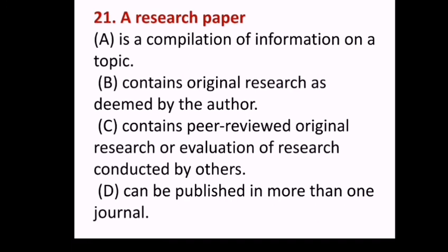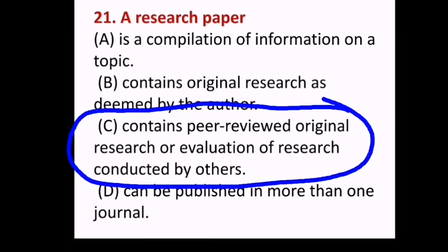Question 21: A research paper — (A) is a compilation of information on a topic, (B) contains original research as deemed by the author, (C) contains peer-reviewed original research or evaluation of research conducted by others, (D) can be published in more than one journal. Answer C, contains peer-reviewed original research or evaluation of research conducted by others.